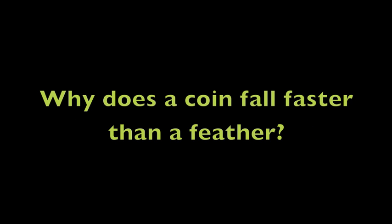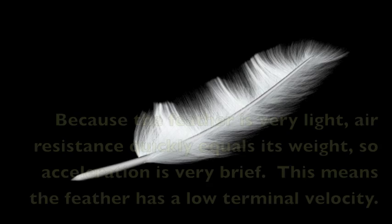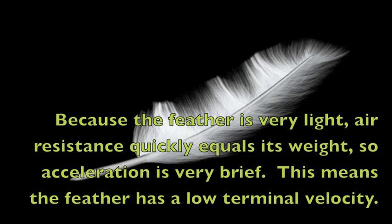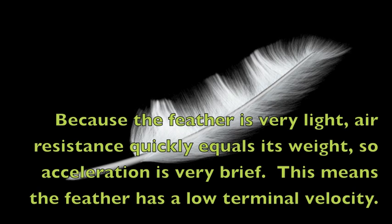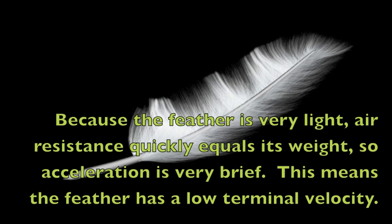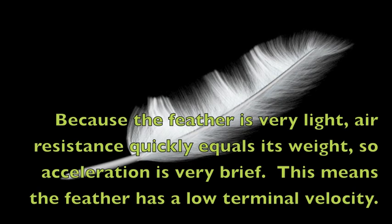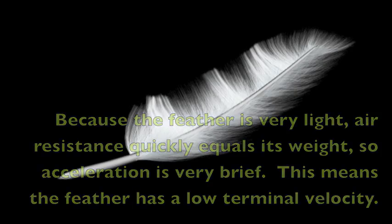So why does a coin fall faster than a feather? The feather is lighter than the coin. Because the feather is very light, air resistance quickly equals its weight, so acceleration is very brief. This means the feather has a low terminal velocity.